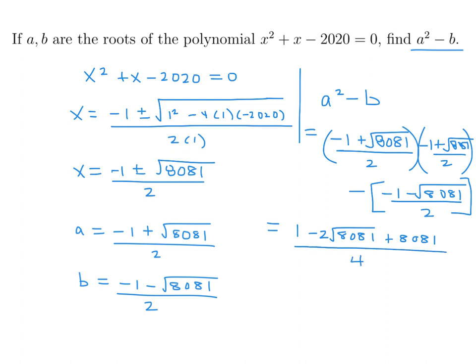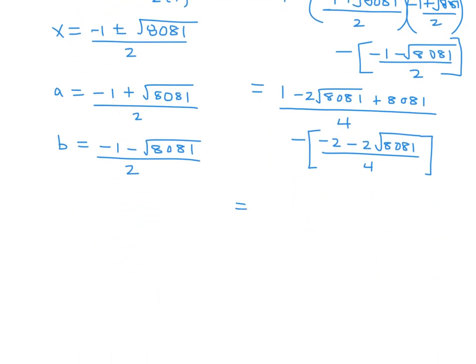So let's put this all over 4. We got 8081 plus 2 plus 1, so 8084. And then this is negative. And this will be negative negative, so that will become positive. So those cancel out. Yeah, minus 2 plus 2 times 8081, so those cancel out. All we're left with is just 8081 over 4, which is 2021.